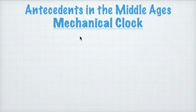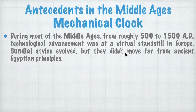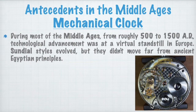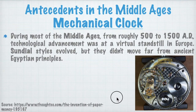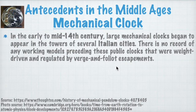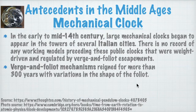The next antecedent is the mechanical clock. During most of the middle ages — roughly 500 to 1500 AD — technological advancement was at a virtual standstill in Europe. Sundial styles evolved as a means of telling time but didn't move far from ancient Egyptian principles. In the early to mid 14th century, large mechanical clocks began to appear in the towers of several Italian cities, with no record of any working models preceding them — these were weight-driven and regulated by verge and foliot escapements.